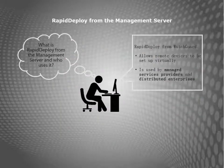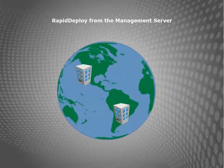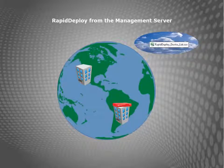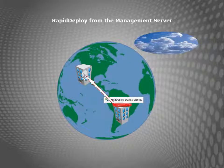Rapid Deploy for the Management Server is a cloud-based process from WatchGuard that is most commonly used by managed services providers and distributed enterprises to deploy devices in remote locations that might not have IT staff present to help with the initial configuration. Instead of manually provisioning a device before sending it to another location, you can create and store configuration data in the cloud and have the device shipped directly to its destination. Once it is powered on and connected to the internet, the device can download its basic configuration settings, which connects it to the management server.